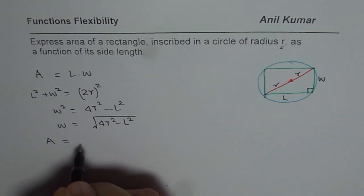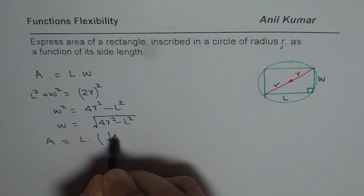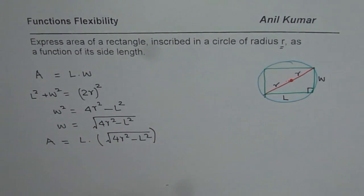So what we get here is area equals to length times this width which is square root of 4r square minus L square. Now in this particular formula you will observe one thing.